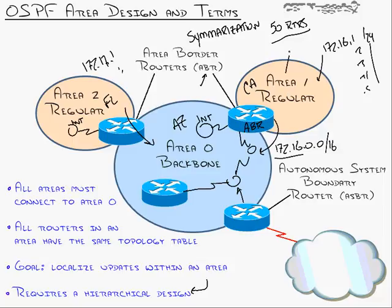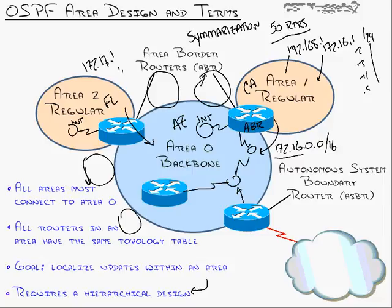The whole reason for using multiple areas is to summarize. If you don't summarize when breaking into multiple areas, you're defeating the whole purpose and causing more processor cycles on all routers. When setting up an OSPF network, be very careful where to place things — mixing 192.168 and 10 networks in the same area means you can't summarize in a hierarchical format. That's known as an IP address hierarchy.